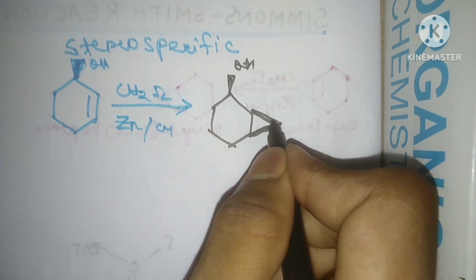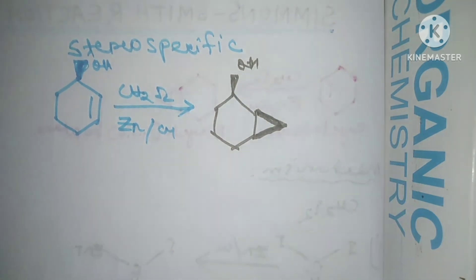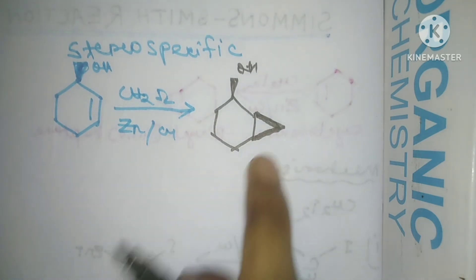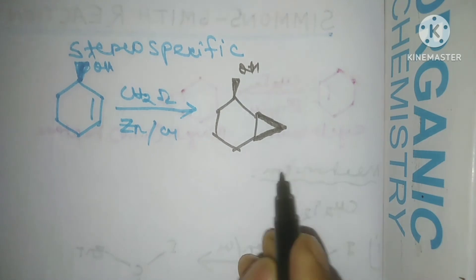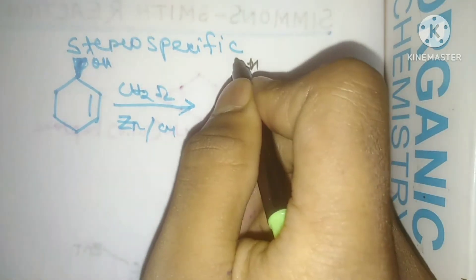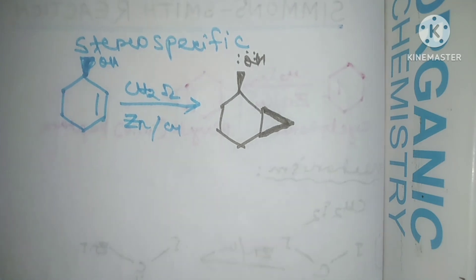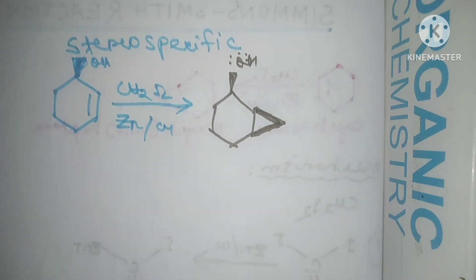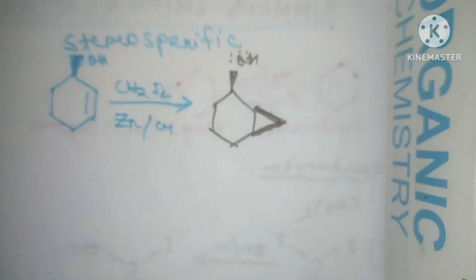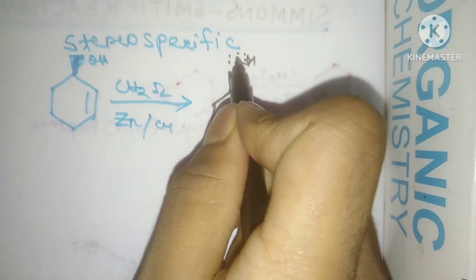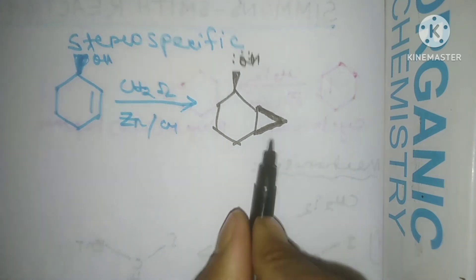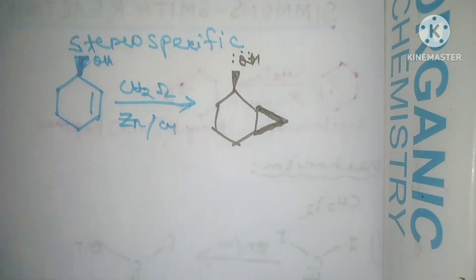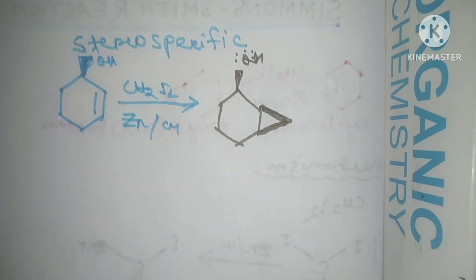The reason why the cyclopropane ring is also above the plane is that this oxygen has lone pairs, and the zinc of the intermediate coordinates the lone pair of this oxygen, due to which the cyclopropane is also formed above the plane.